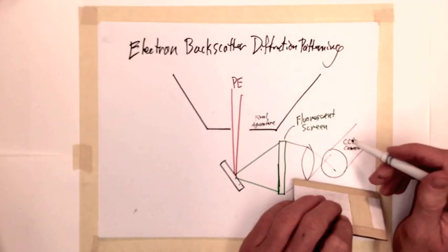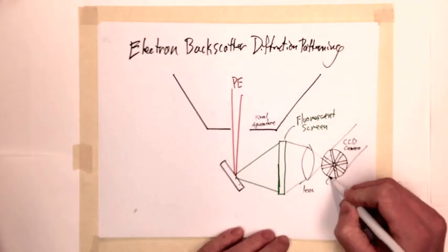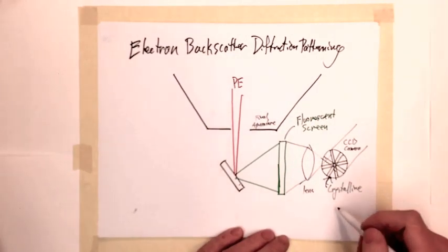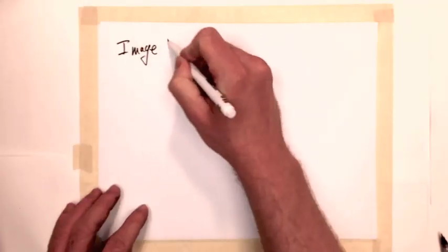This light is focused onto a film for analog imaging or a CCD camera for digital imaging. Bunches of electrons will result in diffraction bands that can demonstrate the crystalline patterns of the material.